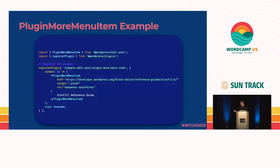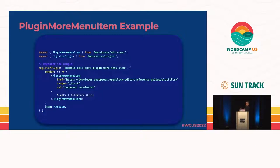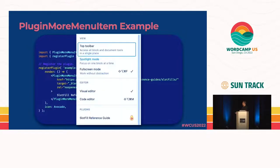As an example, I'm adding an item that links out to the SlotFill reference guide on the Block Editor Handbook. I'm adding target and rel, which are not props this SlotFill supports, so those will be trickled down to the button underneath. Then we add some text. When that renders it looks like that, and clicking it takes you to the right place.